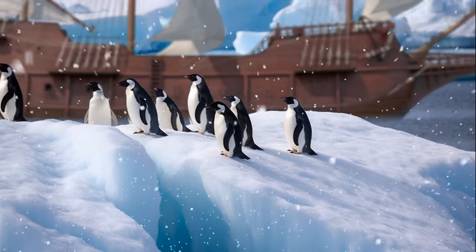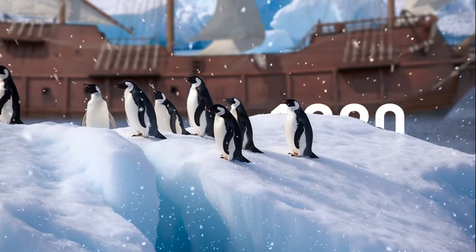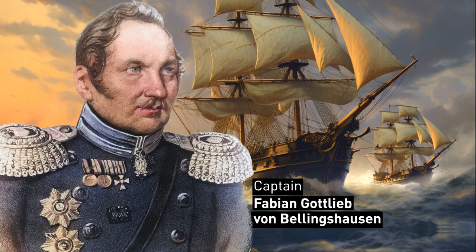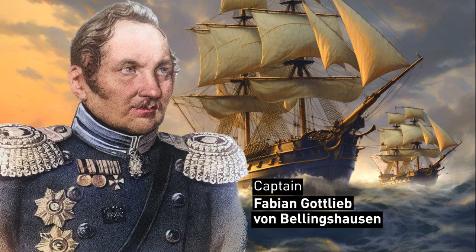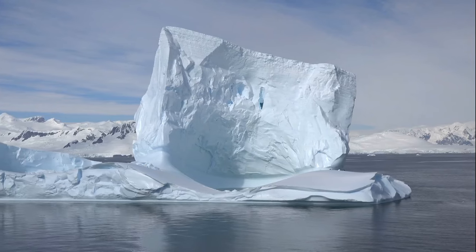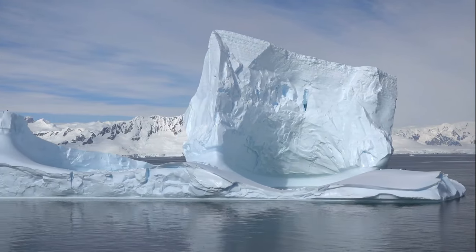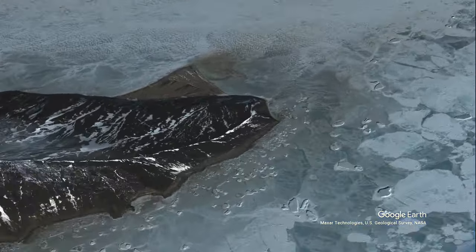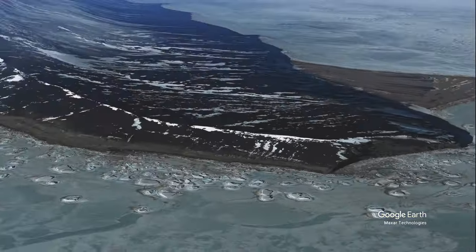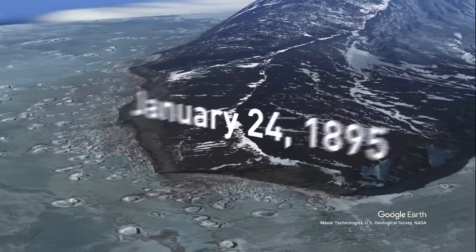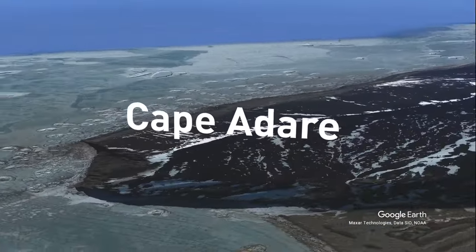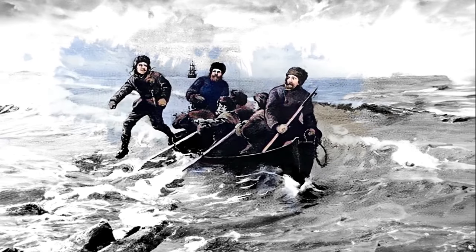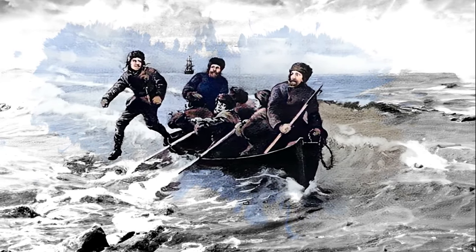The first sighting of Antarctica is widely acknowledged to have taken place in January of 1820, during the voyage of two ships under the command of Captain Fabian Gottlieb von Bellingshausen as part of a two-year exploratory expedition around the world. The first undisputed landing on Antarctica didn't happen until much later, on January 24, 1895, at Cape Adare during the whaling voyage of the ship Antarctic led by Henrik Bull.